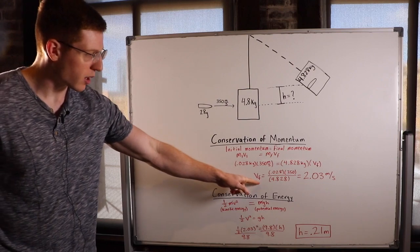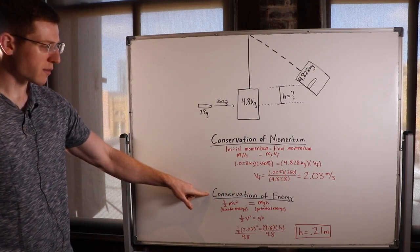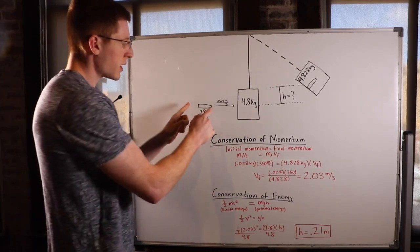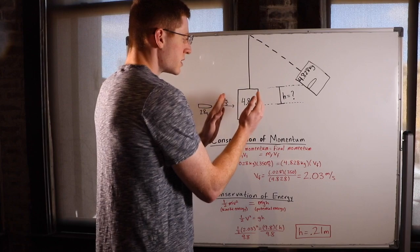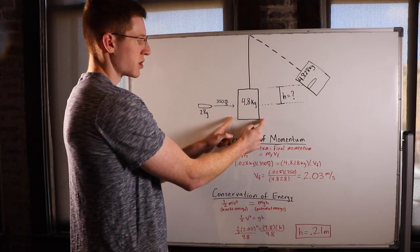So now we can use this final velocity of the combination mass to use conservation of energy to find this height. So we know when the bullet lodges in the block, it's got only motion energy. It's got only kinetic energy. It's all motion.